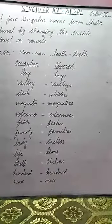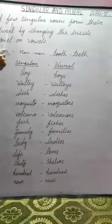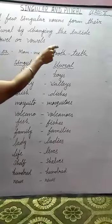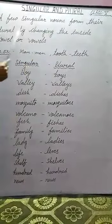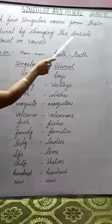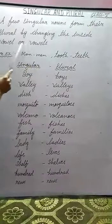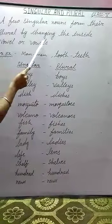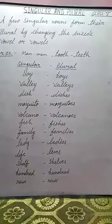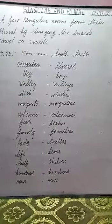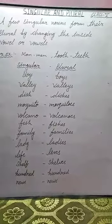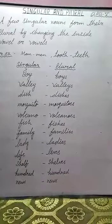The next rule is: a few singular nouns form their plurals by changing the inside vowel or vowels. Sometimes we change the vowel or vowels which come inside the word to make the plural.